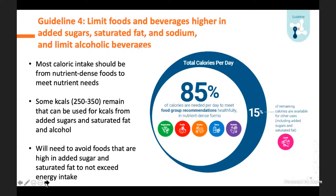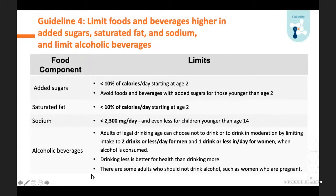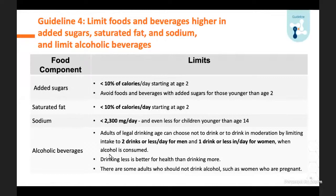One criticism was that the committee didn't talk about treating obesity. But many of the guidelines were set within the context of not exceeding energy intake—moderation, portion size, and nutrient density. When we look at the specific limits: less than 10% of calories from added sugar starting at age two, and really avoiding sugars younger than age two because there's simply no room. Saturated fat is also less than 10% of calories. For sodium, we went with a recent National Academy report recommendation. The final guidelines on sugar and alcoholic beverages were not quite as restrictive as the committee recommended—we recommended less than 6% for sugar, but the guidelines say 10%.